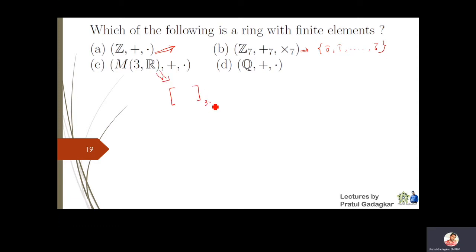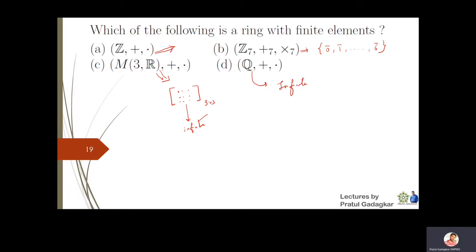M3R means the set of all 3×3 matrices with entries in real numbers. Since the entries are allowed to be real numbers, you can form infinitely many such matrices. The set of rational numbers is also infinite. So the answer is Z7, with respect to addition modulo 7 and multiplication modulo 7.